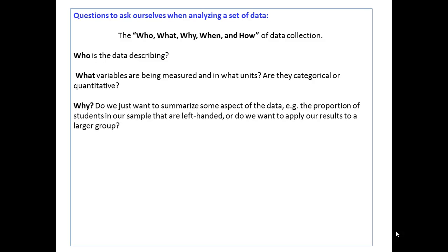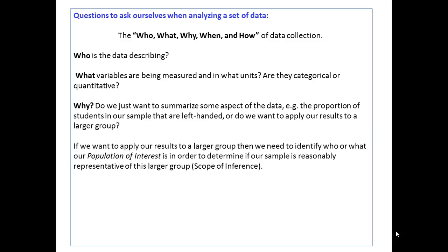Why? Do we just want to summarize some aspect of the data — for example, the proportion of students in our sample that are left-handed? Or do we want to apply our results to a larger group? If we want to apply our results to a larger group, then we need to identify who or what that group is, which we'll call our population of interest, in order to determine if our sample is reasonably representative of this larger group. We'll talk about this as the scope of inference.